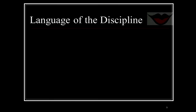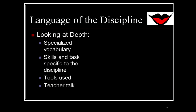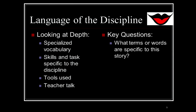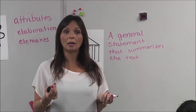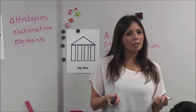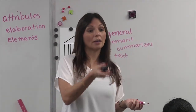Language of the discipline — and that icon is a mouth. When you think of language of the discipline, you want to think of specialized vocabulary, skills and tasks specific to the discipline, and tools used and teacher taught. Teacher taught is what the lower grades use — they ask what kind of words does your teacher say? So when I say what is the same as this, does your teacher say 'what is the same' or do they say 'what is the synonym?' What is the antonym? What is the opposite?